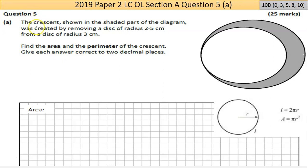This question 5 here is area and volume. Part A says the crescent shown in the shaded part of the diagram was created by removing a disk of radius 2.5 centimeters from a disk of 3 centimeters. So if I try to represent that radius there of 2.5 compared to a radius of the bigger one of 3.